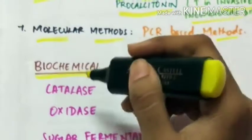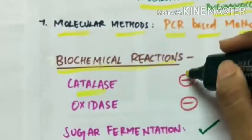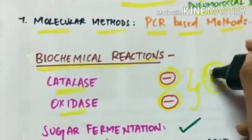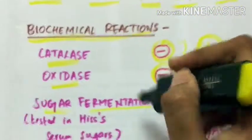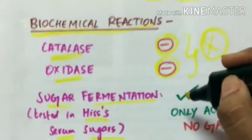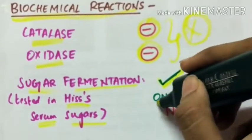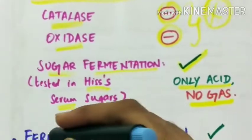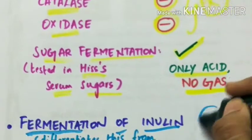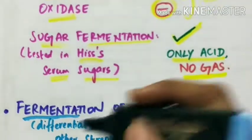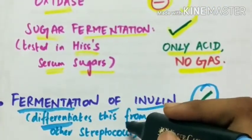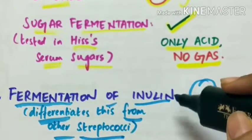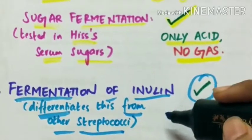Biochemical reactions. Streptococcus pneumoniae is catalase negative and oxidase negative. Both catalase and oxidase are negative. Sugar fermentation which is tested in his serum sugars. Sugar fermentation is present but only acid is formed. There is no gas. Next is fermentation of inulin. This test is seen in Streptococcus pneumoniae. This differentiates strep pneumoniae from other streptococci. So fermentation of inulin along with optochin sensitivity, these two tests differentiate strep pneumoniae from other streptococci.